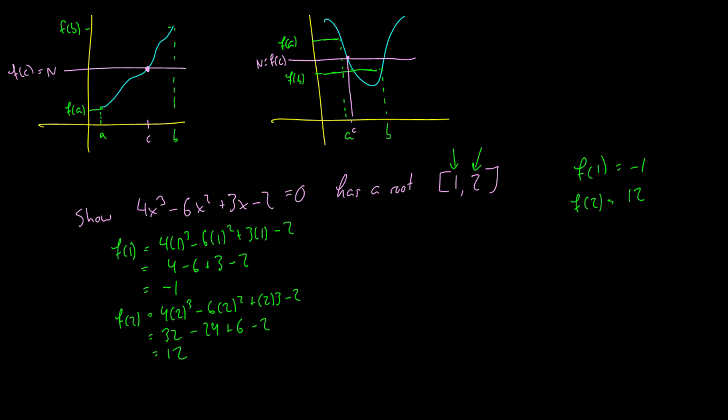We're looking for a certain number where f(c) is equal to 0 because that is what a root of a number is, is when the equation equals 0. So we know that f(1) is less than 0 and f(2) is greater than 0. So there must be some number between 1 and 2 or when we evaluate it that also equals 0.